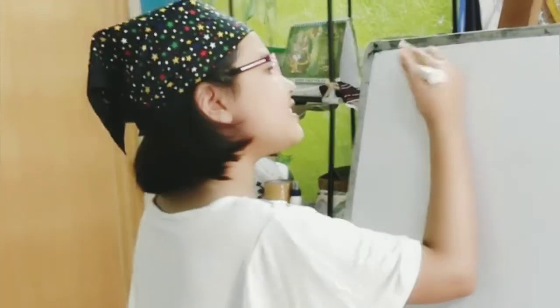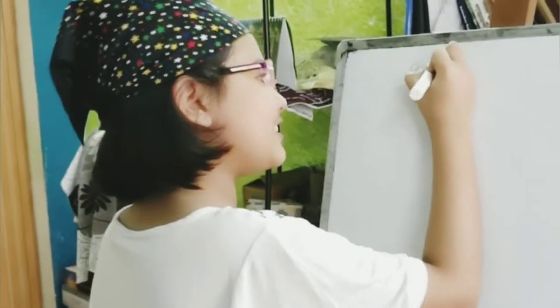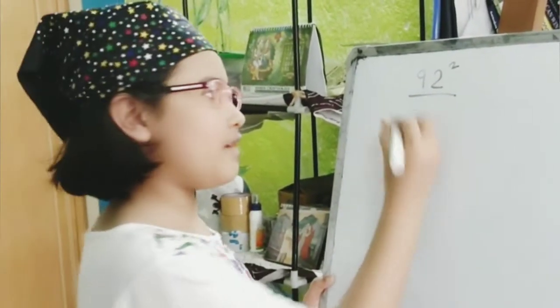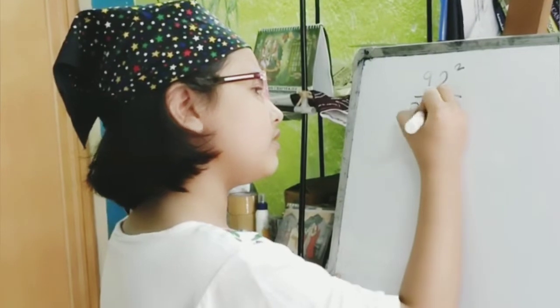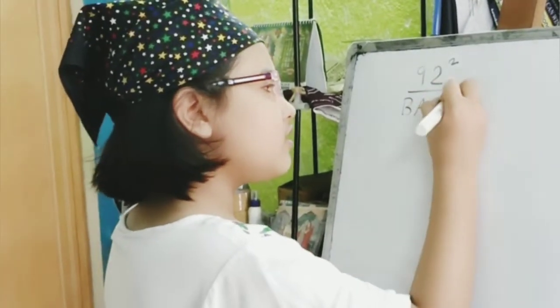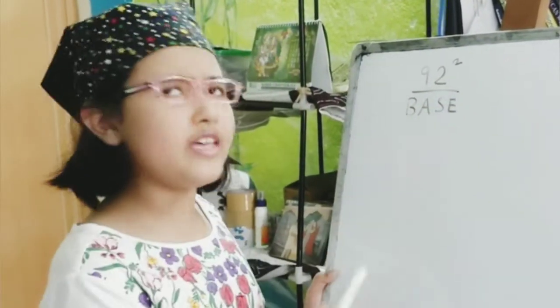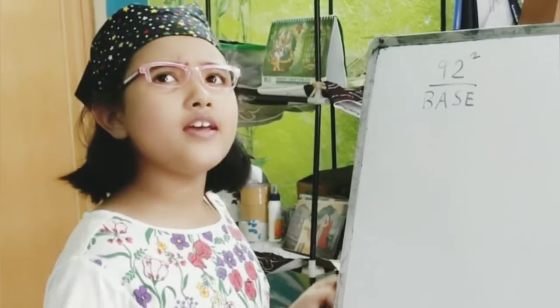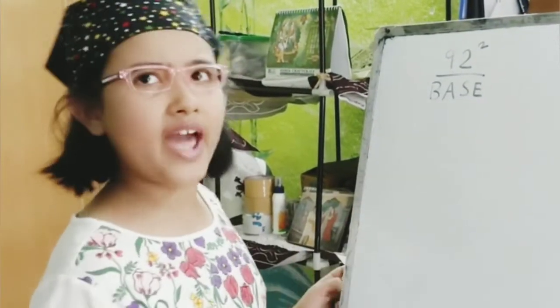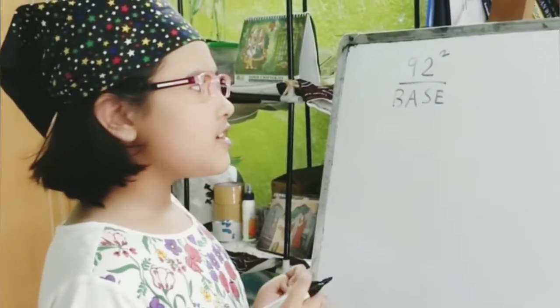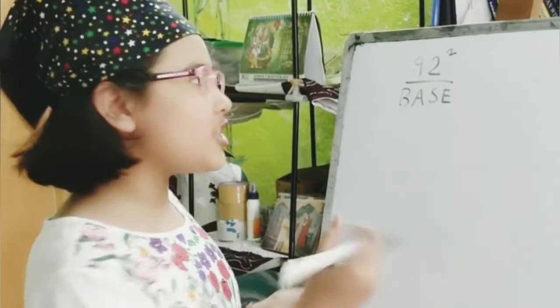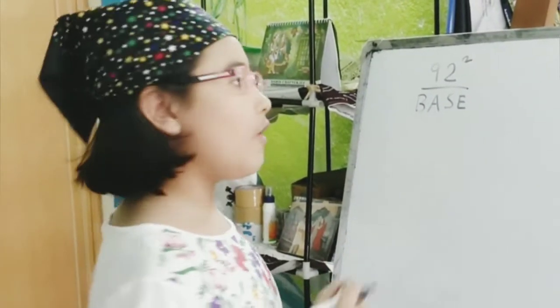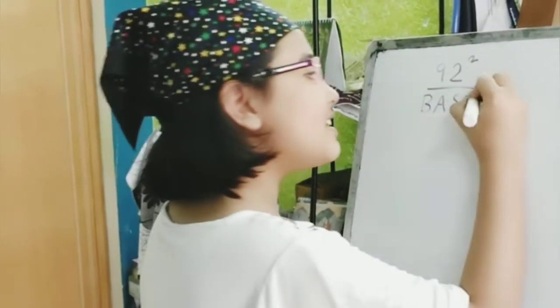So, we write 92. Now, the base number. The base number of this is not 10. Because 10 is quite far from 92, right? But, 100 is just after 8. So, the base number of 92 will be 100.